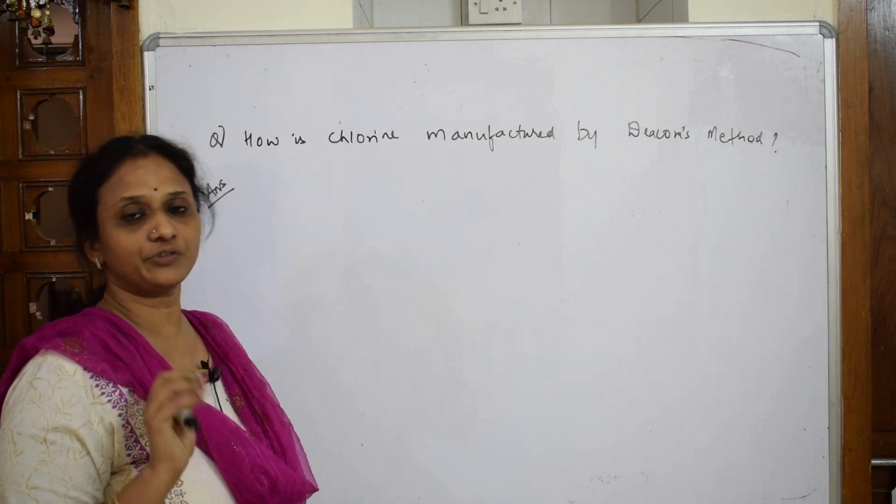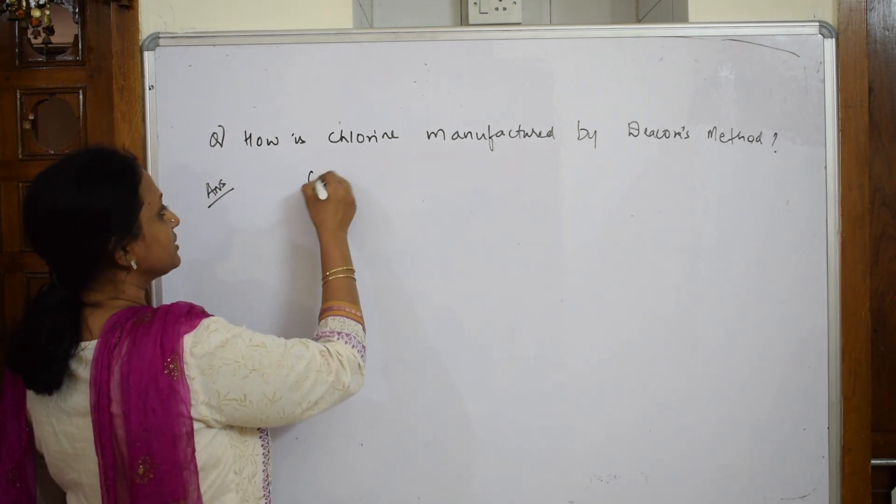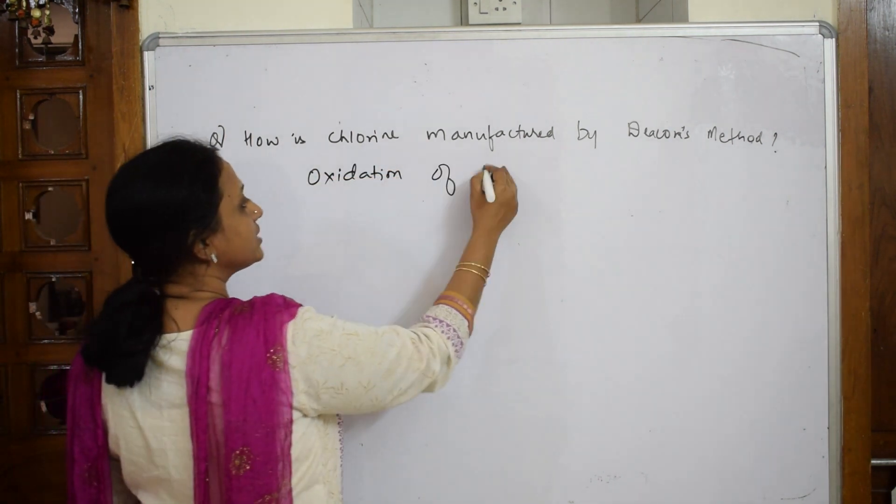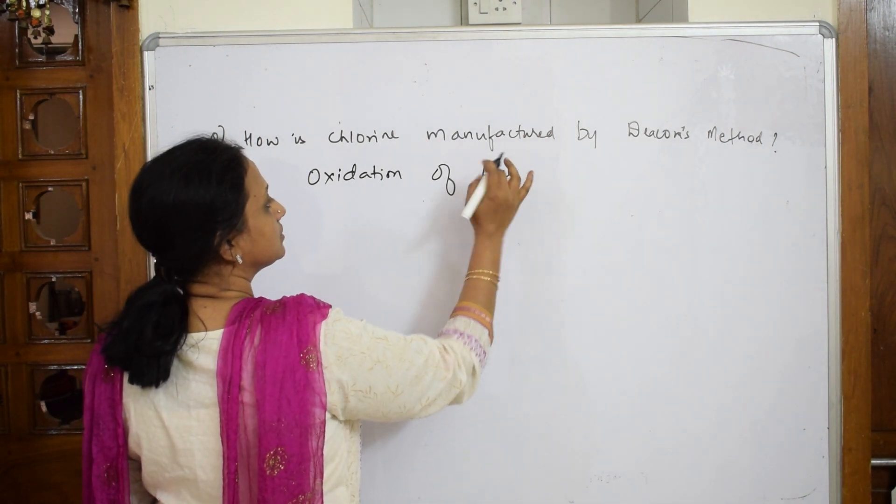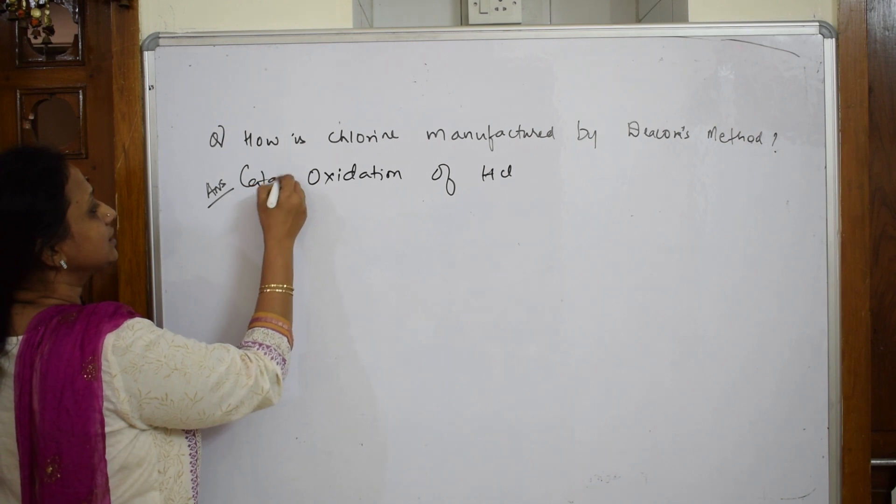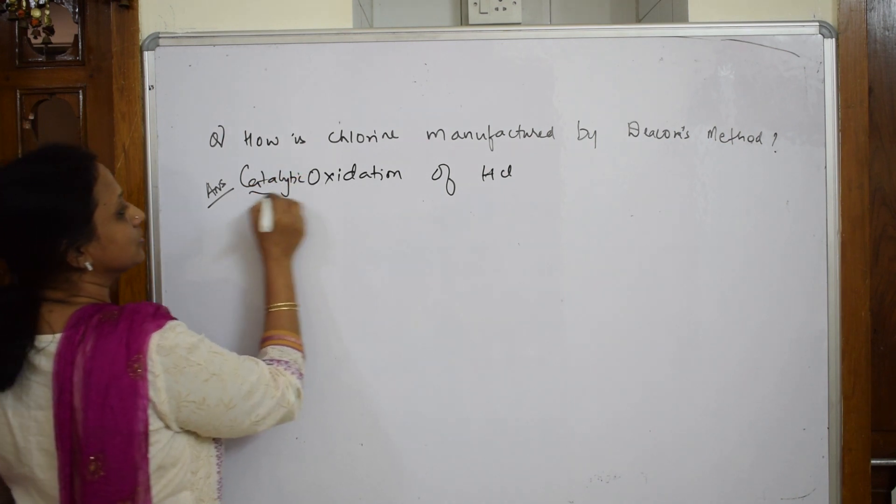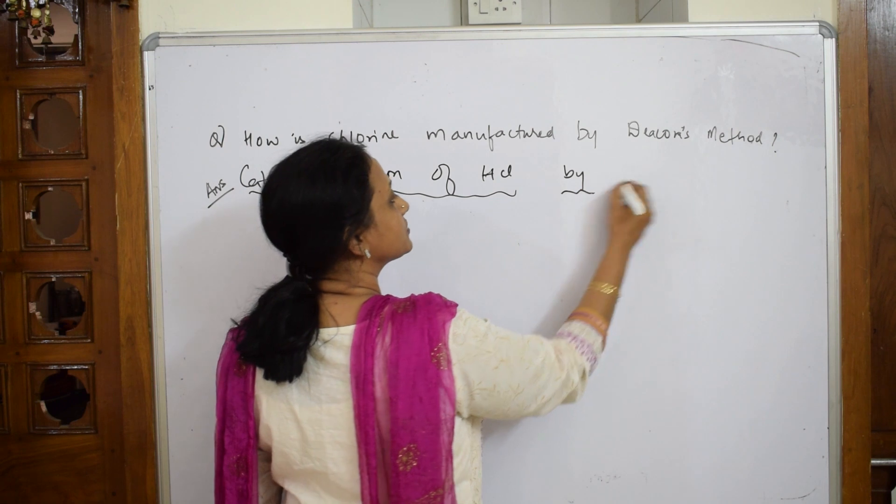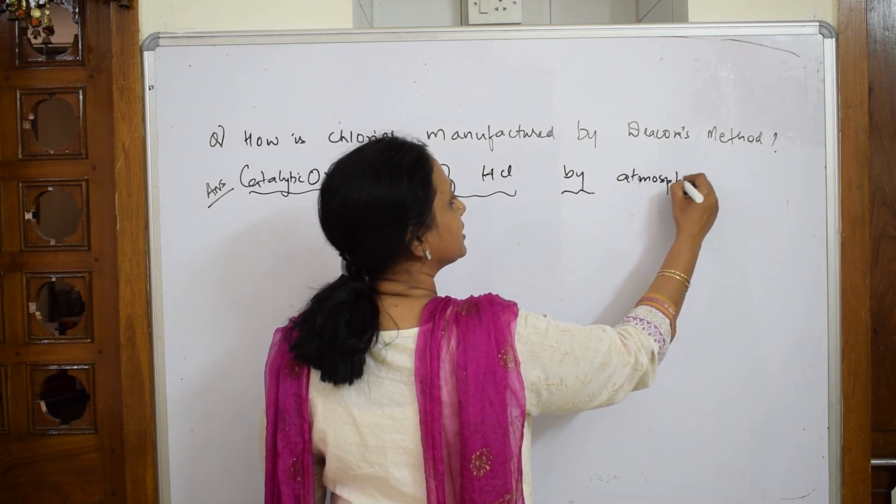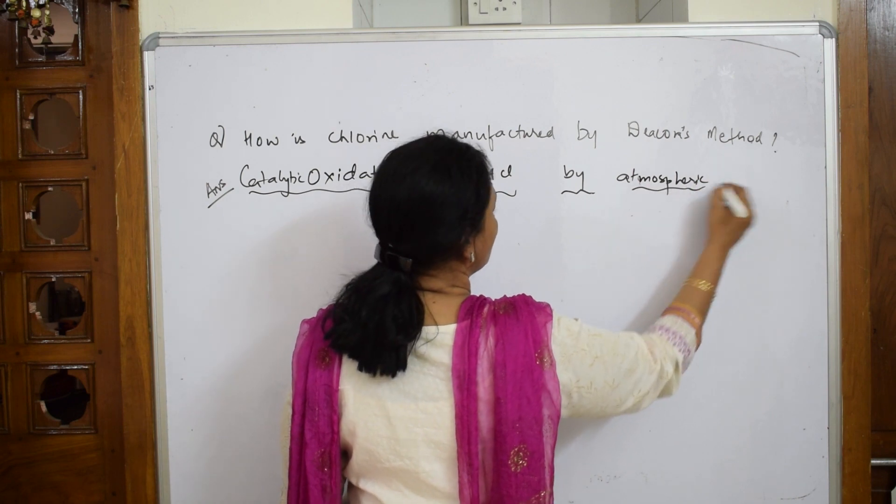It is oxidation of HCL. That's it. So Decon's method is basically oxidation of HCL, or catalytic oxidation. Let's write that: catalytic oxidation of HCL, which is oxidized by atmospheric oxygen.